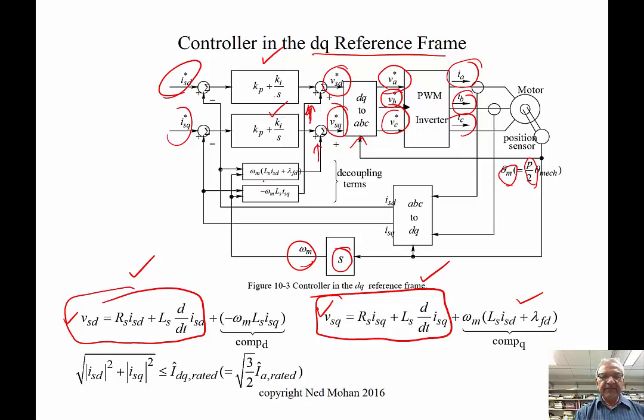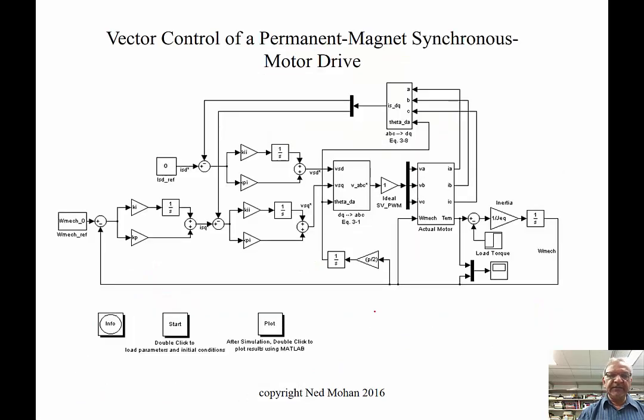There's a limit to these currents—they should be less than the rated value, which relates to the phase current rated value by this expression. I'm just trying to give an overview of these things. We can then model this in Simulink, which is shown here.